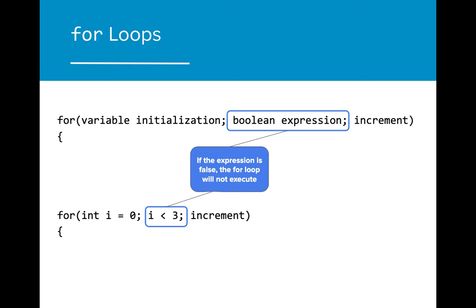The next component is the Boolean expression. We need to create a Boolean expression that will eventually become false, so the for loop will stop executing. In this case, we've set the Boolean expression to i is less than three. This implies that as long as i is less than three, the for loop will continue to execute.